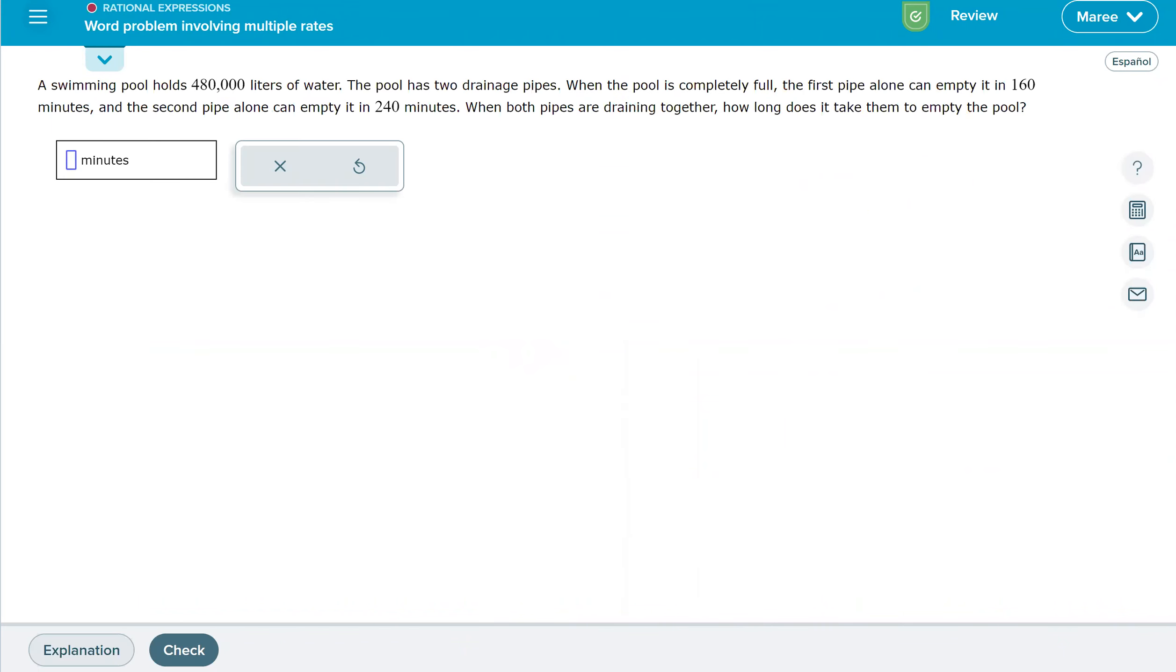Swimming pool holds 480,000 liters of water with two drainage pipes. The first pipe alone can empty it in 160 minutes. So let's write up our fraction and figure out what that is.